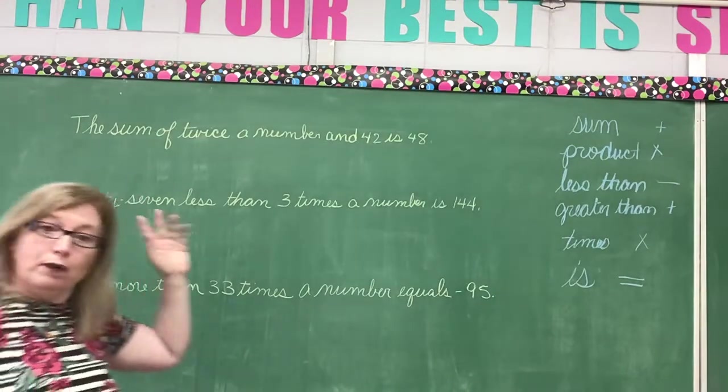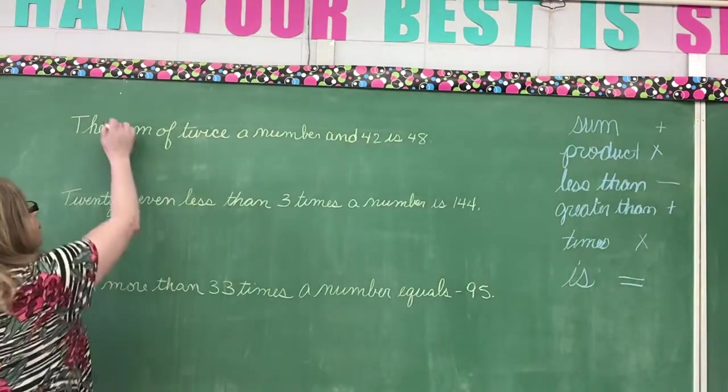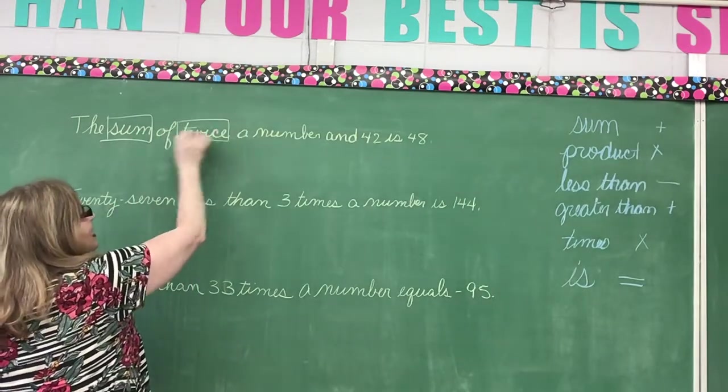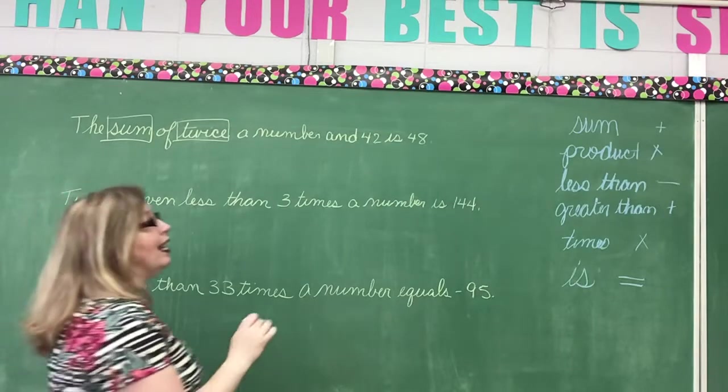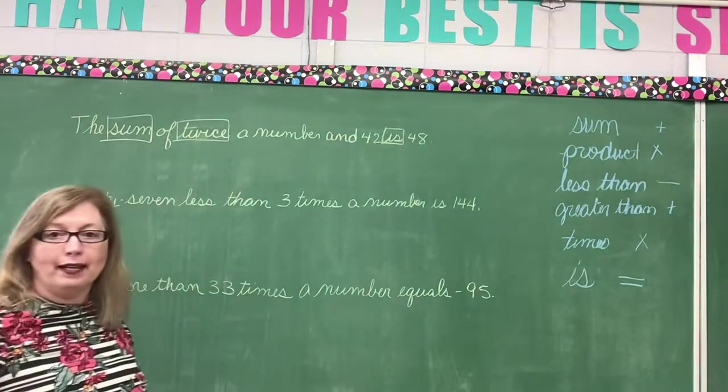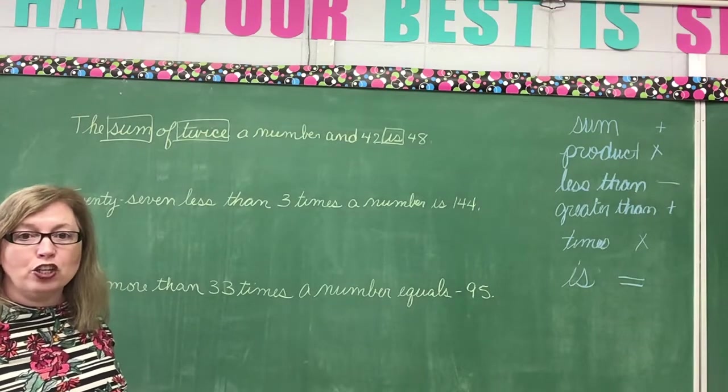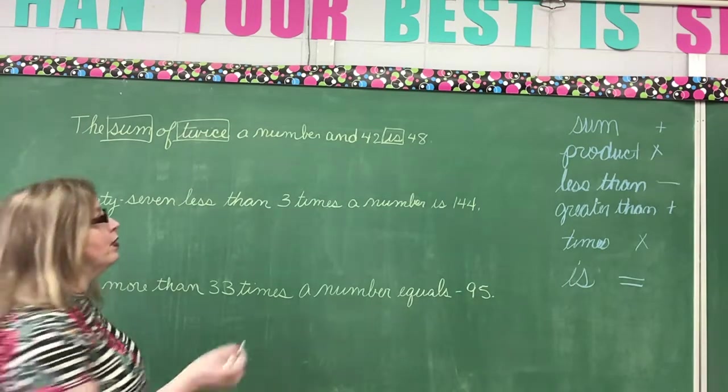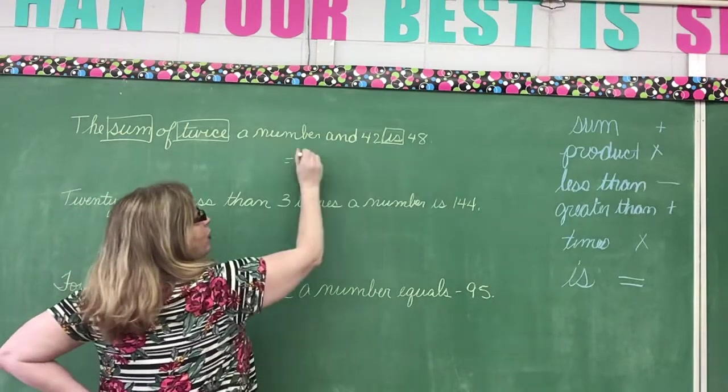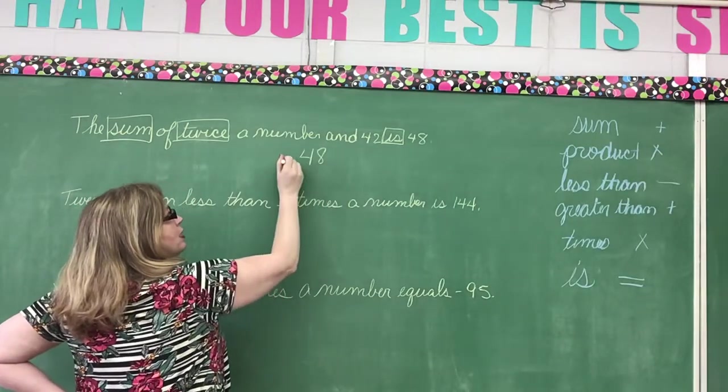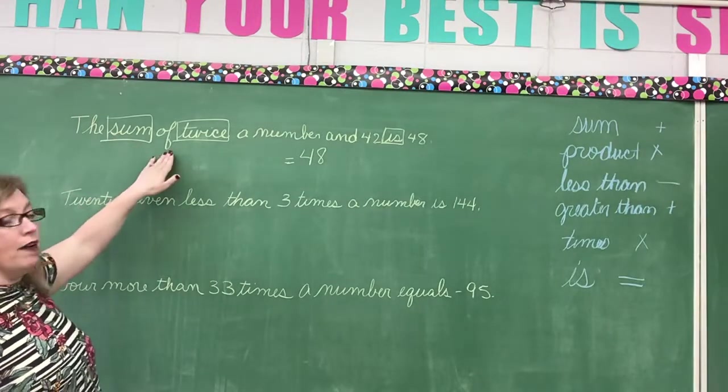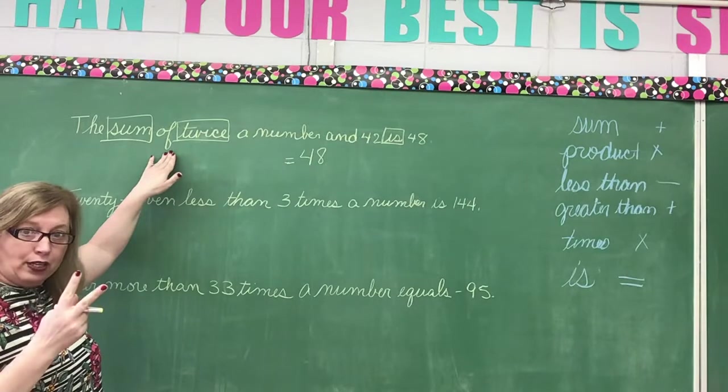The sum ding ding that's a clue word. The sum of twice a number and 42 is 48. Well the easiest thing to know right away is the is right. We've been doing that for a long time. So we know that this side of the equation is going to be is 48. That's pretty simple. Now let's go to this side of the equation. The sum of. Okay that means I'm going to add two things correct.